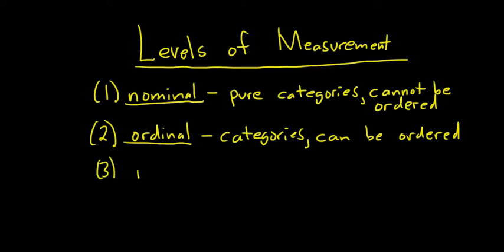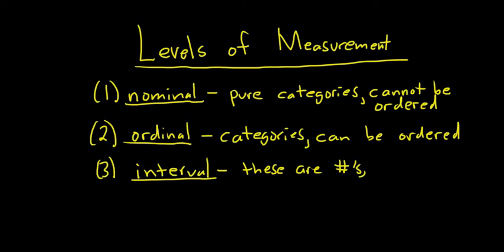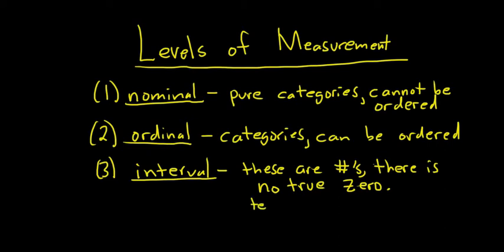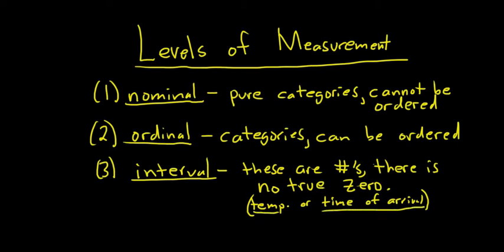The next level of measurement is called interval — probably the trickiest one. These are numbers, but the key is that zero is not the starting point; there is no true zero. The main examples we'll see are temperature, because zero is not the coldest it could be — it could be negative five degrees outside — and time of arrival or departure, because zero hours military time is not the starting point. Those are the two main examples for interval.